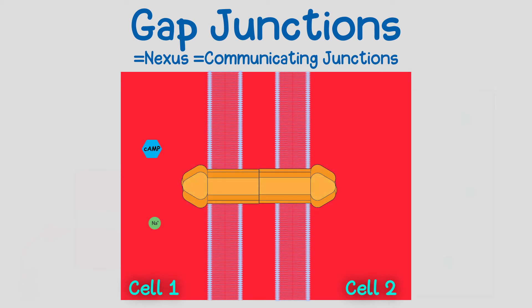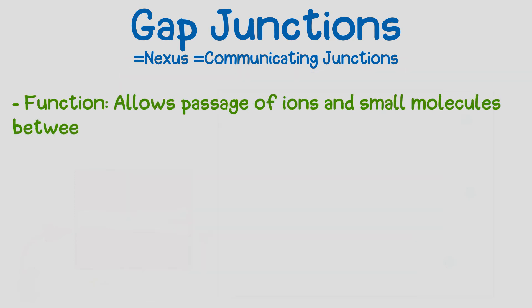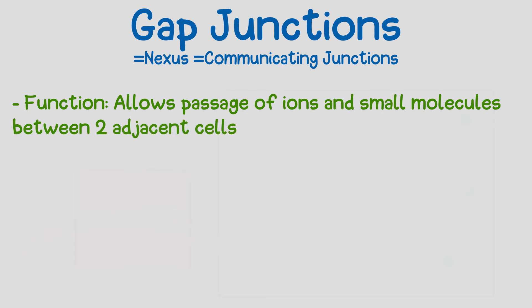Gap junctions are a type of cell-cell junction that connect the cytoplasm of two adjacent cells. Their function is to allow passage of small molecules and ions. In summary, gap junctions are a type of connection between cells whose function is to allow passage of small material for various functions, for example heart muscle contractions.